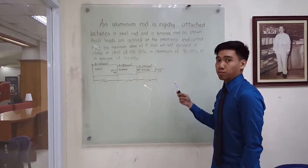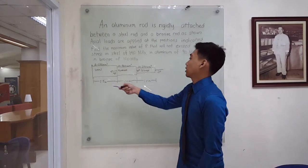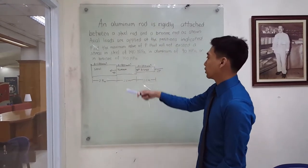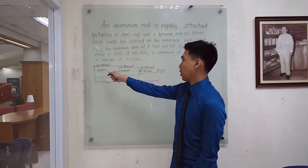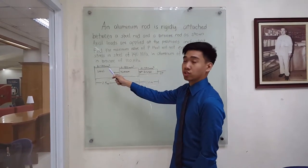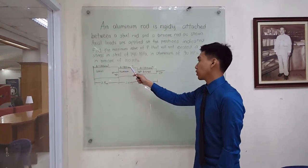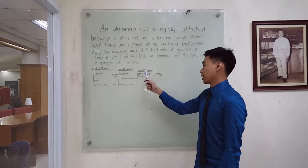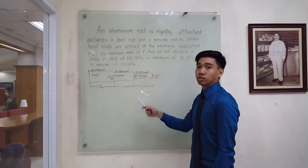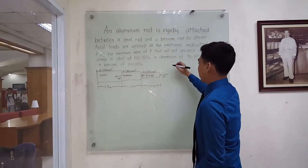First we will determine what are the given in this problem. As shown in the figure, steel has an area of 500 square millimeters, while aluminum has an area of 400 square millimeters, and bronze has an area of 200 square millimeters.